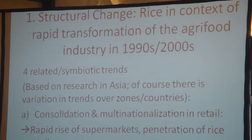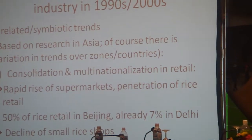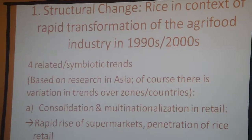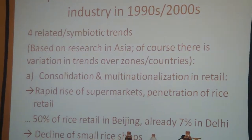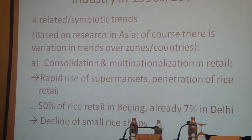The first trend, one I'm very passionate about, is the consolidation and multinationalization in retail — simply put, the rapid rise of supermarkets. What we've been finding is that supermarkets that might have been a very small share of the food economy in 1990, even in Asia, have grown to 30–50% or more of the food economy by 2010. For example, while there were no supermarkets in China at the end of 1989, by the study we did this year, we found that 50% of rice retail in Beijing is now going through supermarkets.